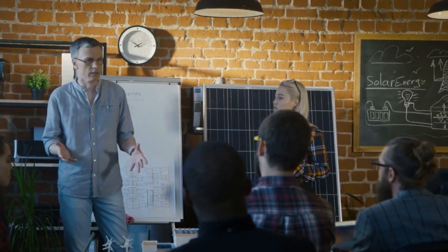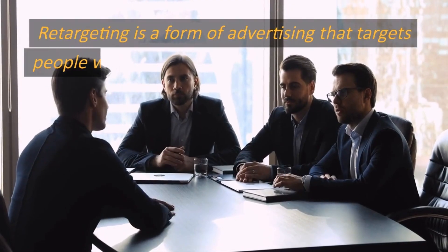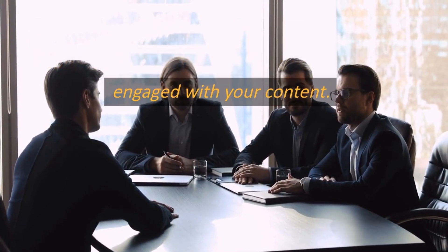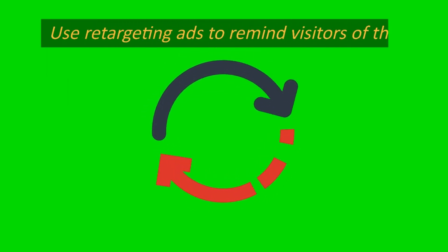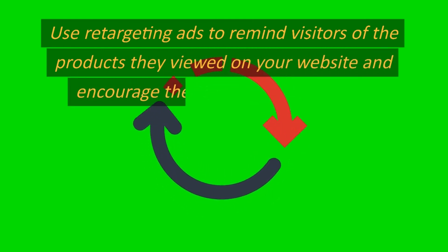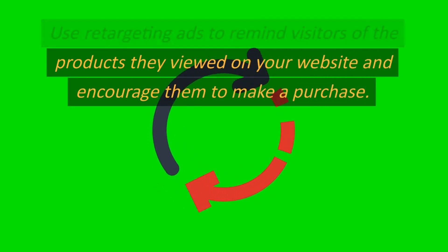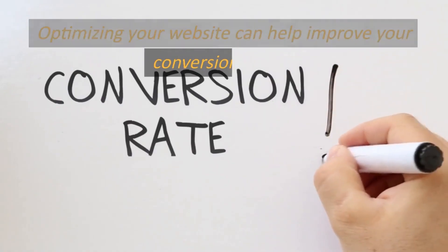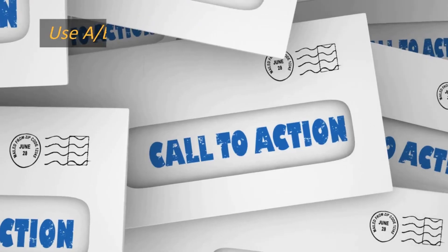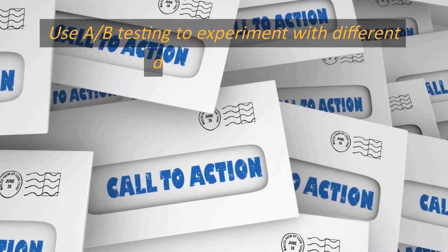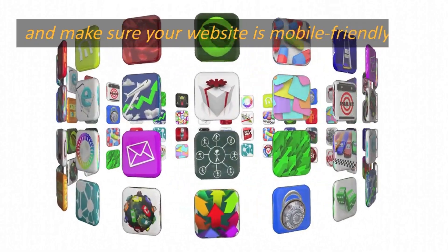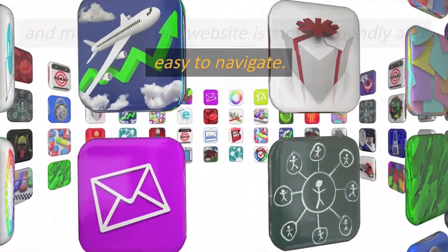Use retargeting. Retargeting is a form of advertising that targets people who have already visited your website or engaged with your content. Use retargeting ads to remind visitors of the products they viewed on your website and encourage them to make a purchase. Optimize your website: optimizing your website can help improve your conversion rates. Use A/B testing to experiment with different designs and CTAs, and make sure your website is mobile-friendly and easy to navigate.